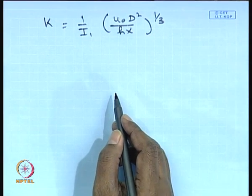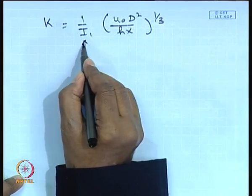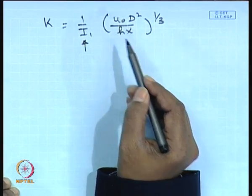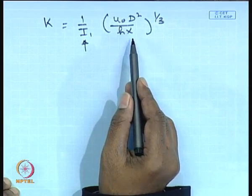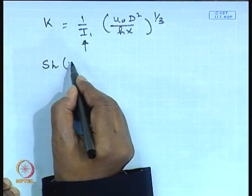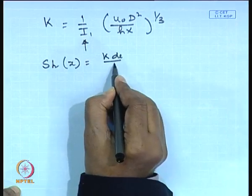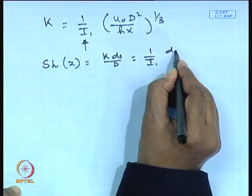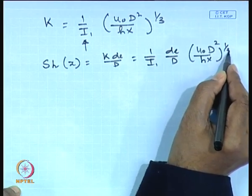If you simplify by substituting k₁ and k₂ into the definition of mass transfer coefficient, k₁/(k₂ minus 1) turns out to be 1/I. So k equals minus (1/I) times (u₀ D²/hx)^(1/3), meaning k is inversely proportional to x to the power 1/3. Once you get the expression for k, you can get the Sherwood number as a function of x-star: Sh = (1/I) times (D/d) times (u₀ D²/hx)^(1/3).